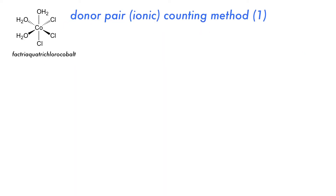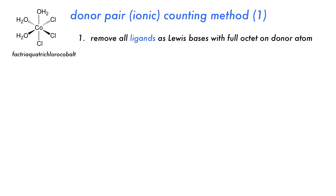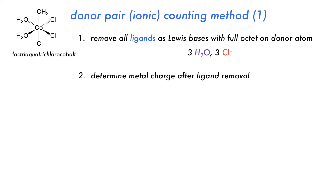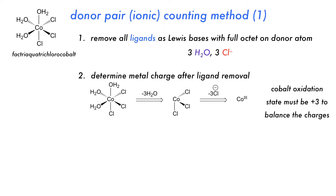To see how the donor pair method works, let's look at an example: the octahedral complex fac-triaqua-trichloro cobalt, which is a sigma-only complex. First, all the ligands are removed as full donor-atom octet Lewis bases. That means three waters are removed as neutral Lewis base ligands, and three chloride anions are removed — because for the chloro ligand to act as a Lewis base, it must retain its electrons as an anion. The second step is to determine the charge on the metal after removing the Lewis basic ligands.